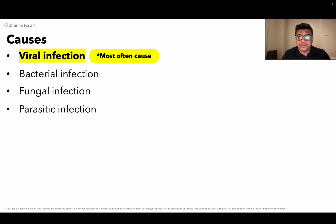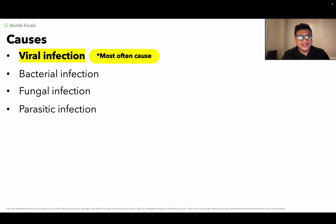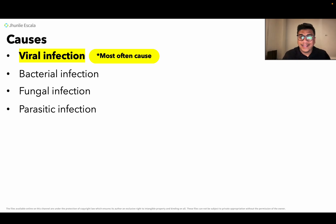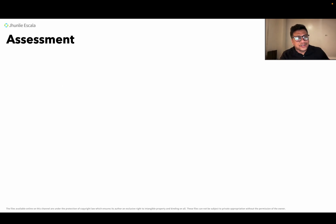Most especially, herpes is the viral type that commonly causes encephalitis — what we call herpes encephalitis. So remember that herpes-type viral infection is the primary causative agent of encephalitis.